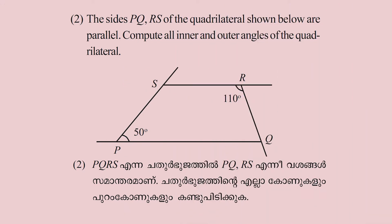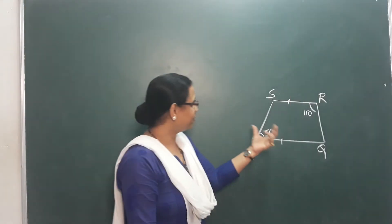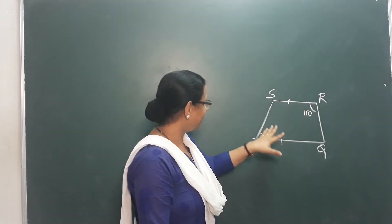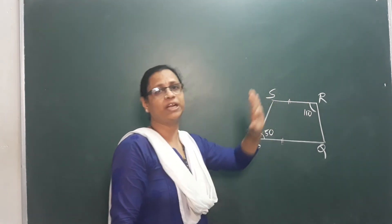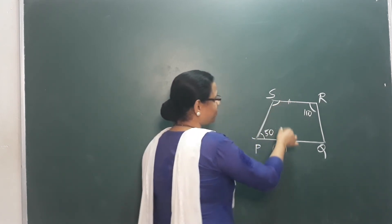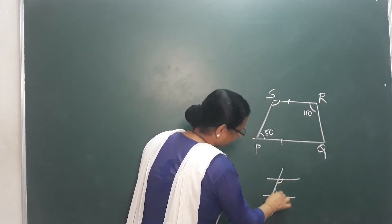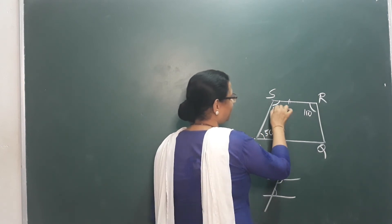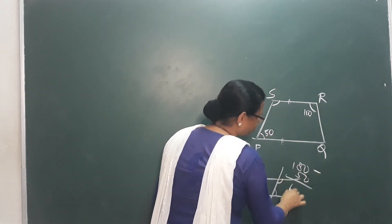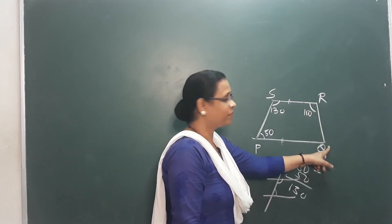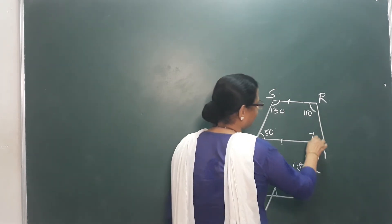Next problem: The sides PQ and RS of the quadrilateral are parallel. Compute all inner and outer angles. Since PQ and RS are parallel, we have a trapezoid. Using a transversal, the co-interior angles are supplementary — they add up to 180. If angle P is 50 degrees, then angle S equals 180 minus 50, which is 130 degrees. Similarly, if angle R is 110 degrees, then angle Q equals 180 minus 110, which is 70 degrees.